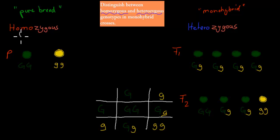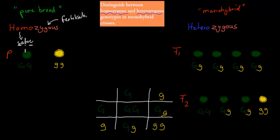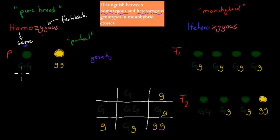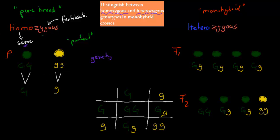Homo means same, and zygous comes from the word zygote — to do with fertilization. So after fertilization, a homozygous plant has only the same type of alleles. The pure breed falls under homozygous, because those plants' offspring have only one type — all capital G, or all small g. So anything that has only the same type of allele after fertilization is homozygous.